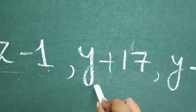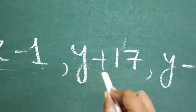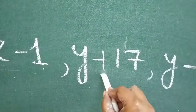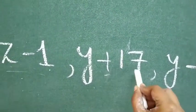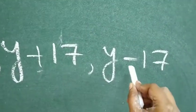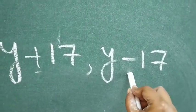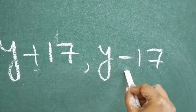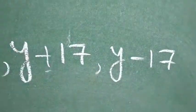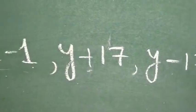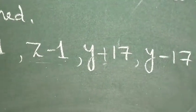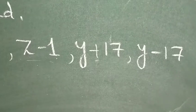And how it is formed? 1 is subtracted from z. Now in the next one, how it is formed? Here, operation used is addition. This is addition. And how it is formed? 17 is added to y. And here, operation is minus. And how it is formed? 17 is subtracted from y. So this way, we will make the table and write the operation as well as how it is formed.